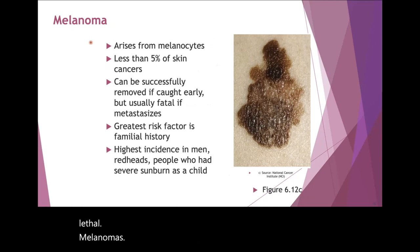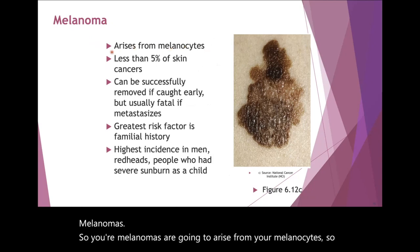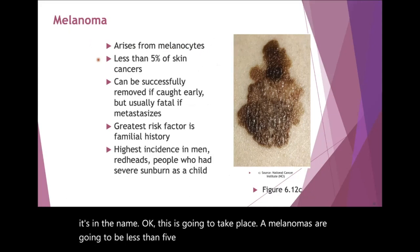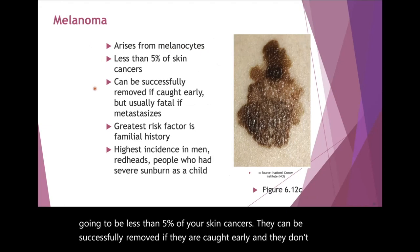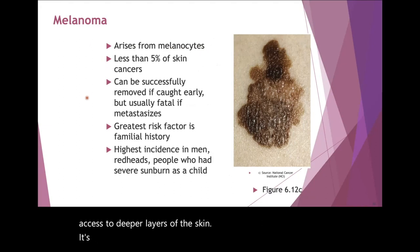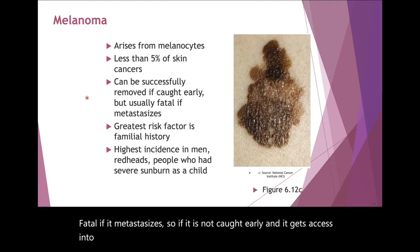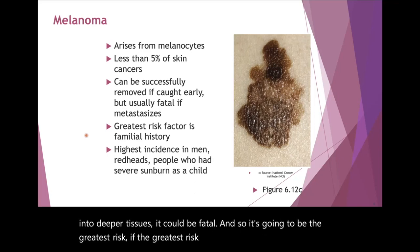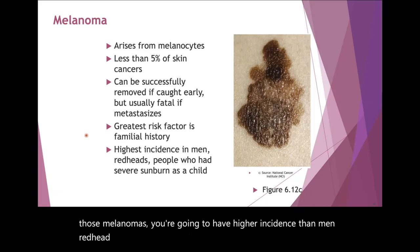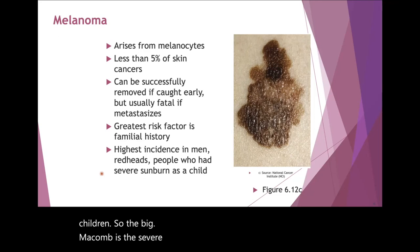Melanomas arise from your melanocytes. Melanomas are going to be less than 5% of your skin cancers. They can be successfully removed if caught early and don't get access to deeper layers of the skin. It's usually fatal if it metastasizes. The greatest risk factors are family history of melanomas, and higher incidence is seen in men, redheads, and people who have had lots of severe sunburns as children. The big take-home is that severe sunburns you got as a child could lead to melanoma as an older adult.